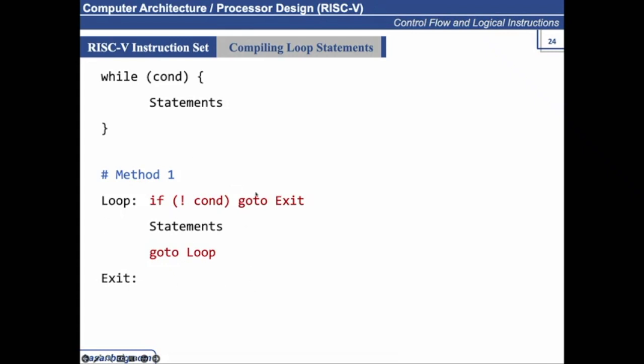otherwise go to loop back again. So this is how the loops are executed. If condition does not satisfy, then go to exit, which means that the loop is finished. Otherwise execute these statements and then go back to the previous instruction.